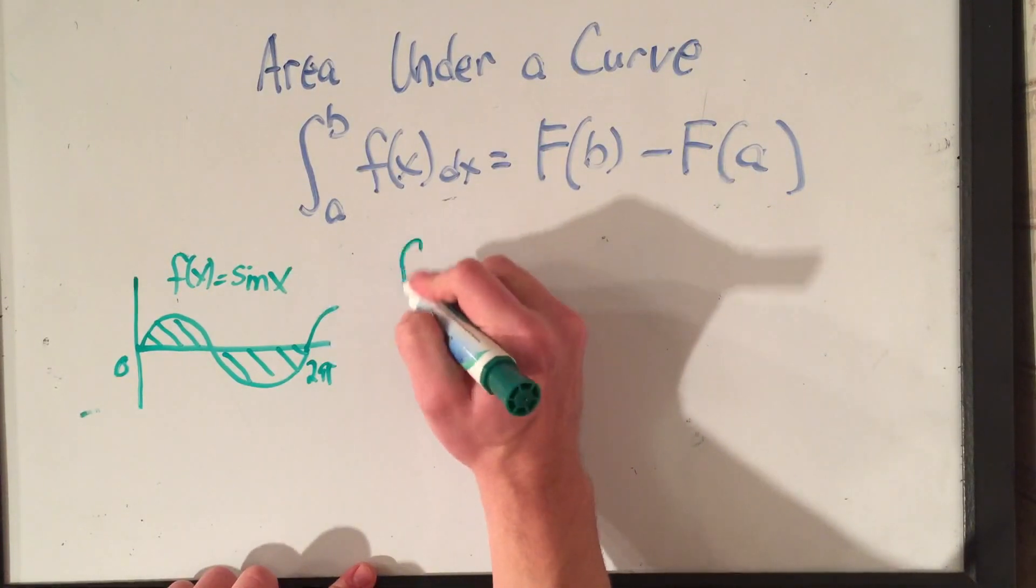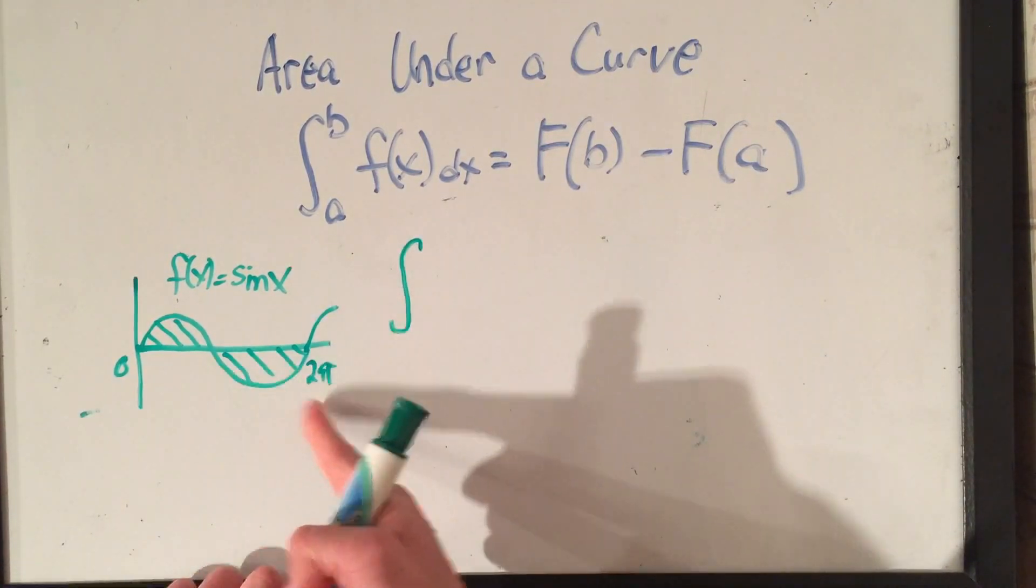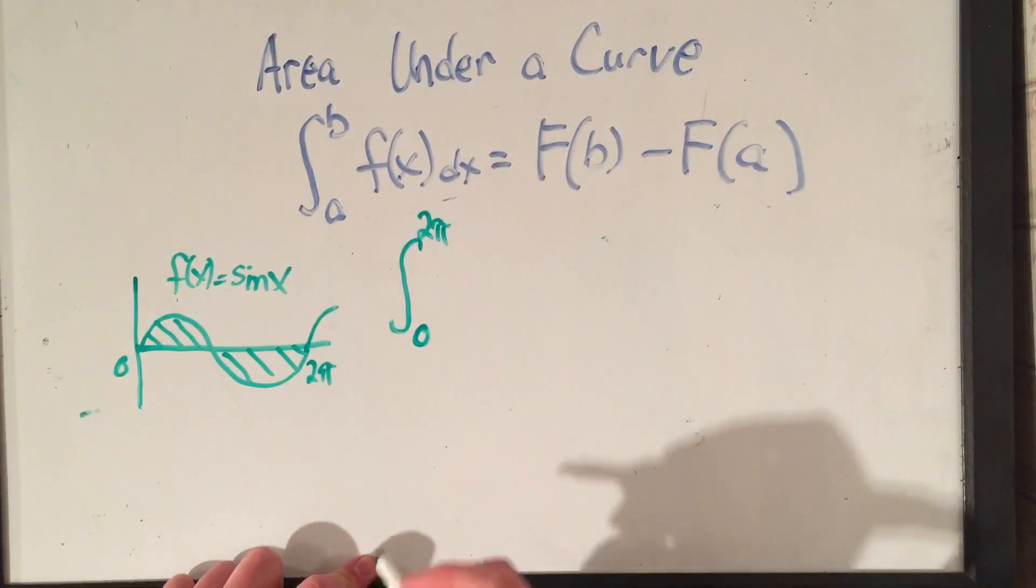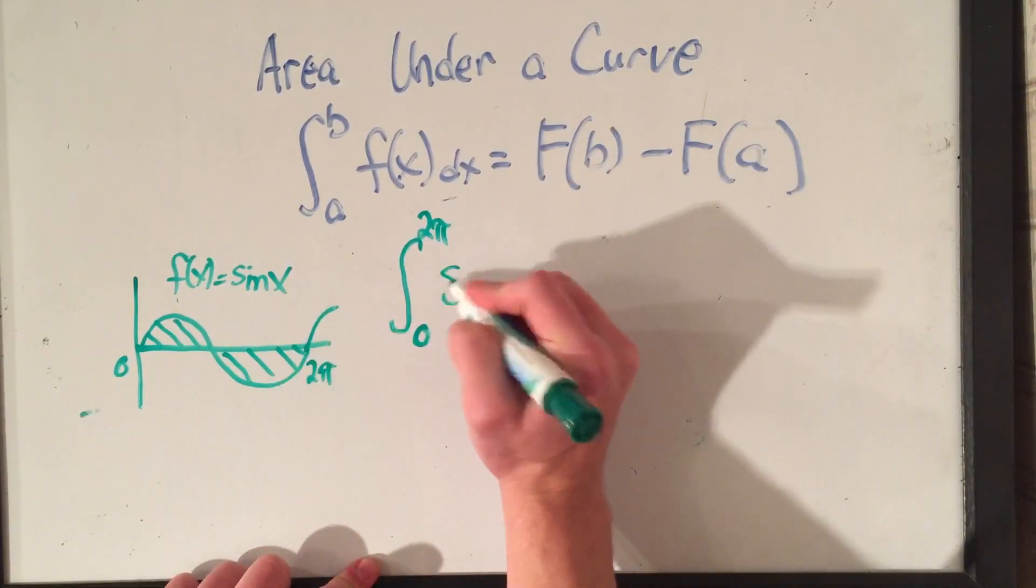That means we're going to do the definite integral from our x limits, we call that 0 to 2 pi, of the function in question, in this case sine x.